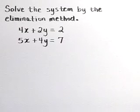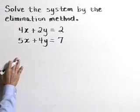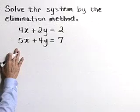Solve the system by the elimination method. Here we have the equations 4x plus 2y is equal to 2 and 5x plus 4y is equal to 7.